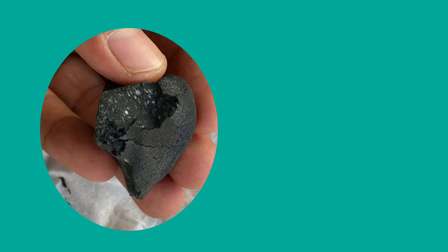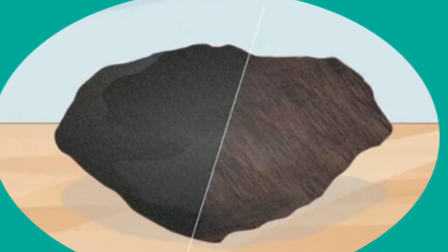Thumbprints in solid iron meteorites will often consist of deeper, rounded holes, plum-sized or larger. The interior colors will differ, but after grinding or polishing, most will reveal tiny silver metallic flecks.